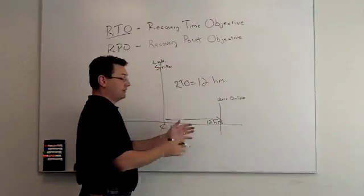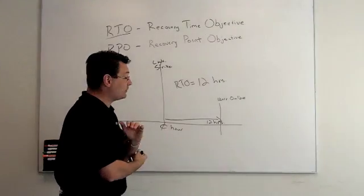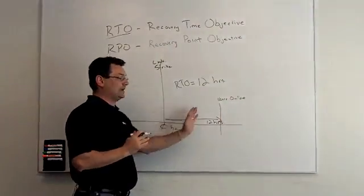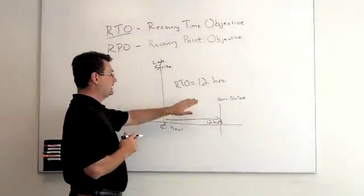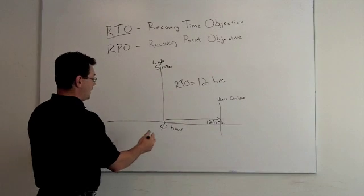That might be 24 hours for your plan, six hours for your plan - however long it takes you to get users connected back to the data is a measurement called RTO.